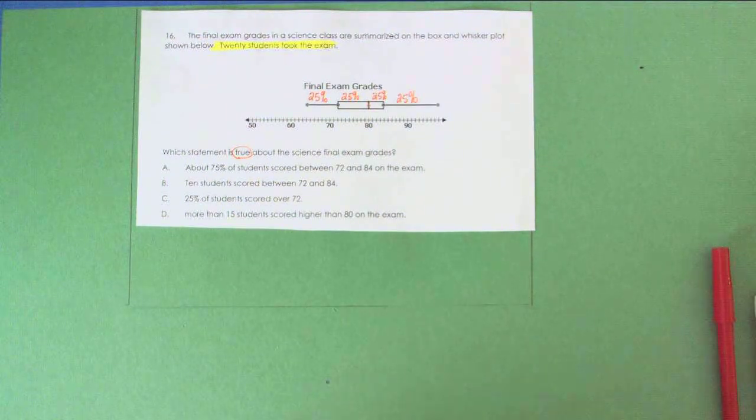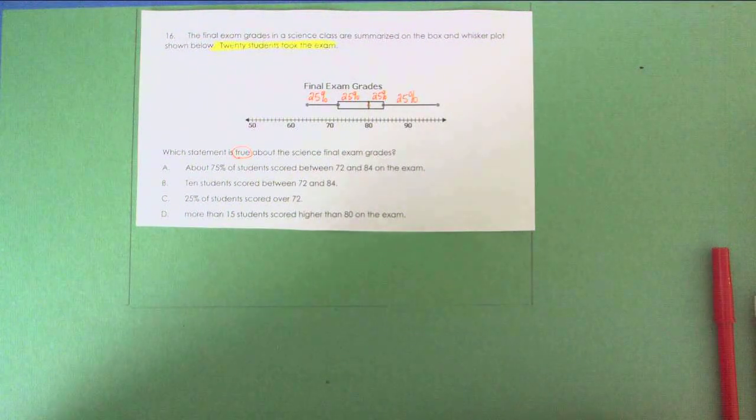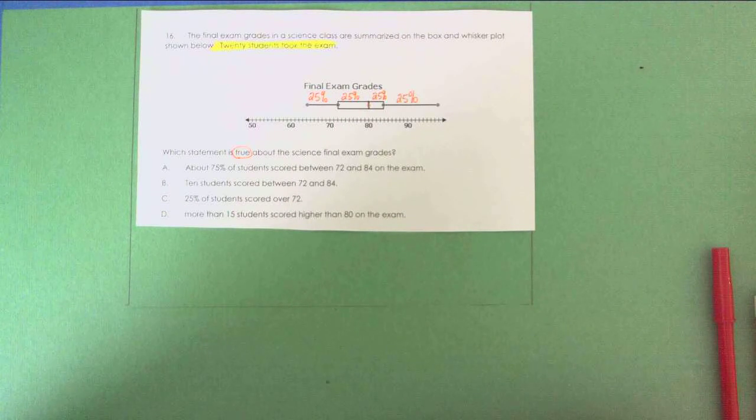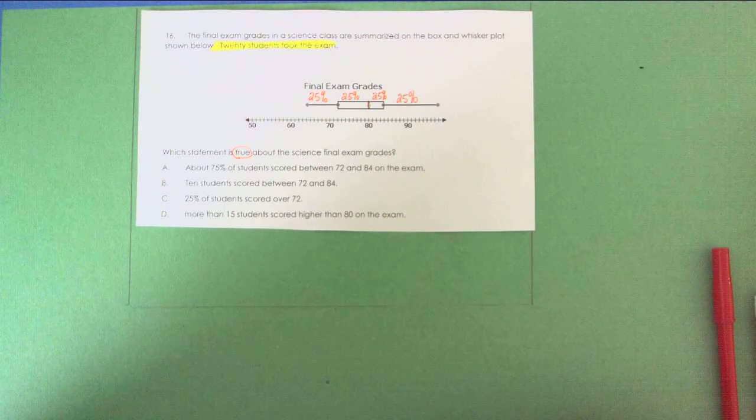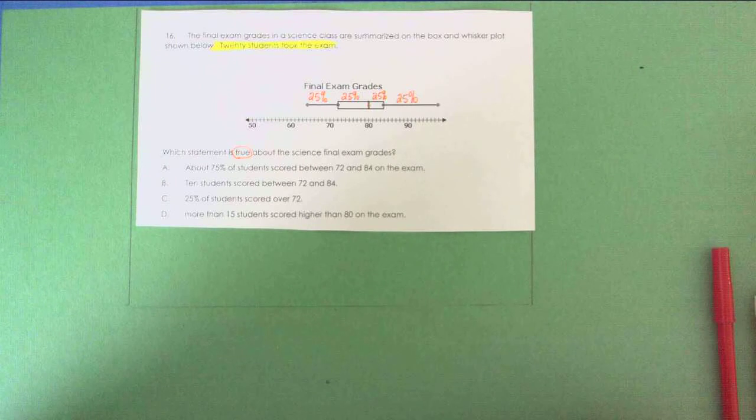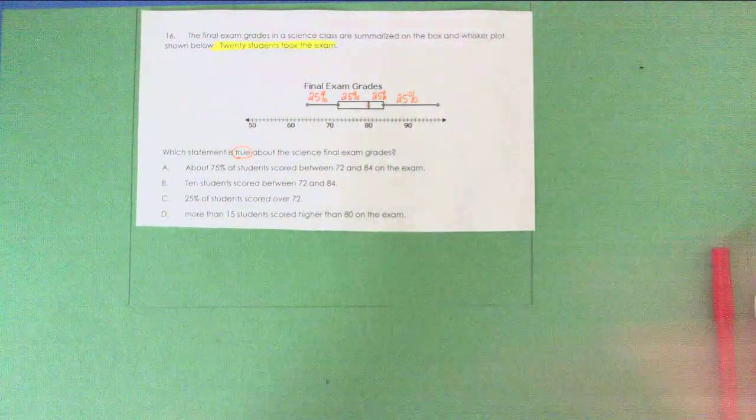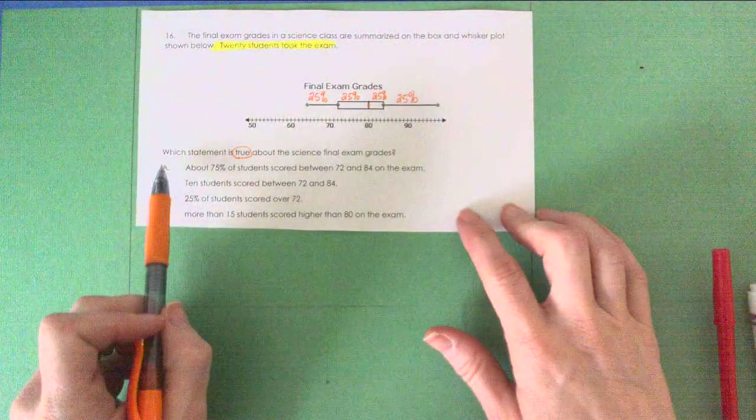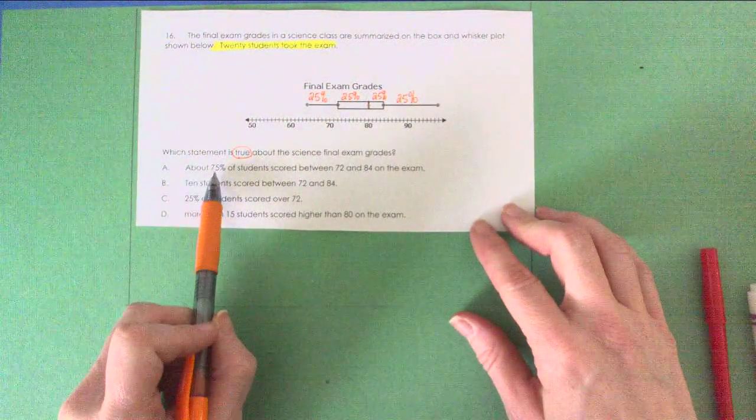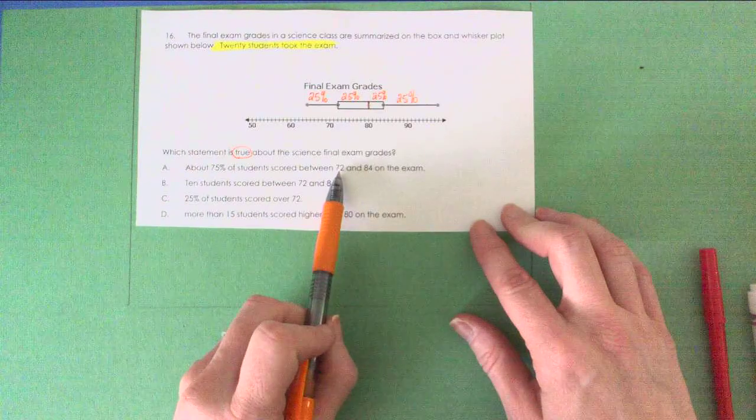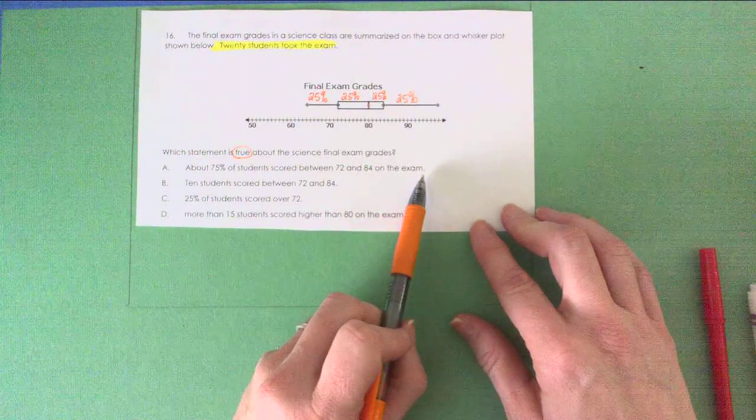Let me tell you what is true. Actually, better yet, change my mind. Let's just go step by step. Let's go A to D and see what's true and what's not true. Let's start with letter A. This is what your brain is going to have to do anyway. Letter A says about 75% of students scored between 72 and 84 on the exam.